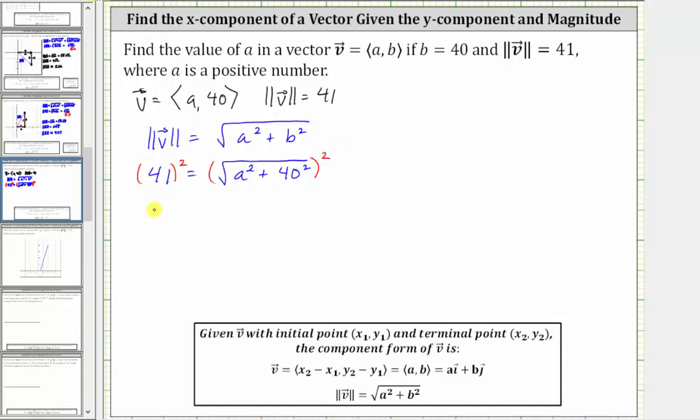On the left side we now have 41 squared equals, on the right side, squaring undoes the square root giving us a squared plus 40 squared.